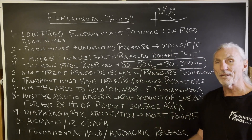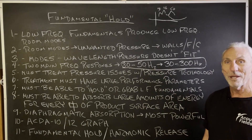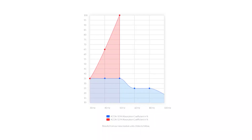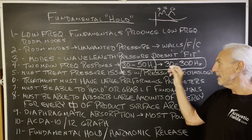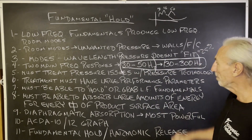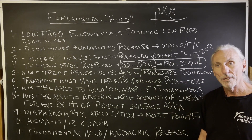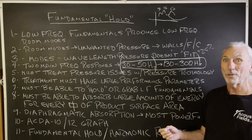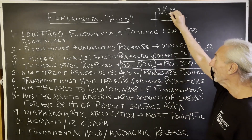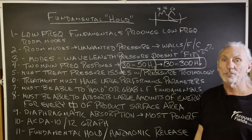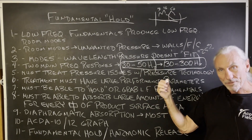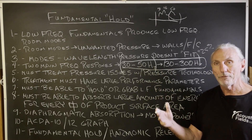Diaphragmatic absorption is the most powerful of membrane and Helmholtz — you have to use diaphragmatic. There's just no other way that science has shown us yet. Look at the performance of the ACDA 12 and the ACDA 10. Look at 30, 40, 50 Hz: at 30 it's 35% absorption, at 40 it's 63%, at 50 it's 100%. Back to this problem area we saw in all rooms — it's a huge sponge for that area. The ACDA 10 is more broadband with about 25% absorption per octave band from 30 to 300 Hz. So you get two kinds of sponges: a big one for the really low peaks, and a broadband one to help with the transition.